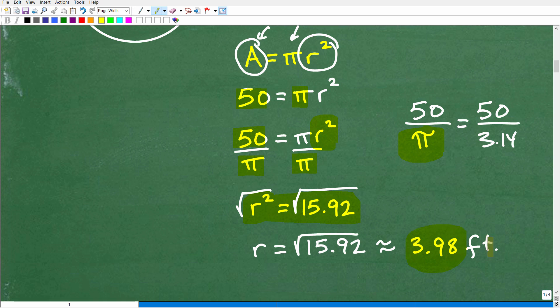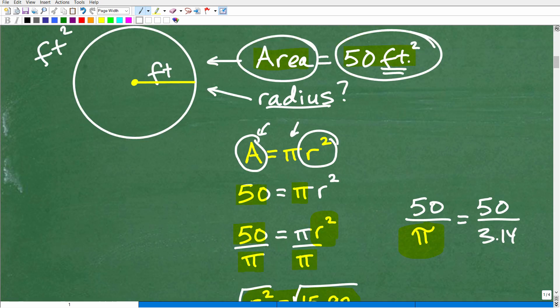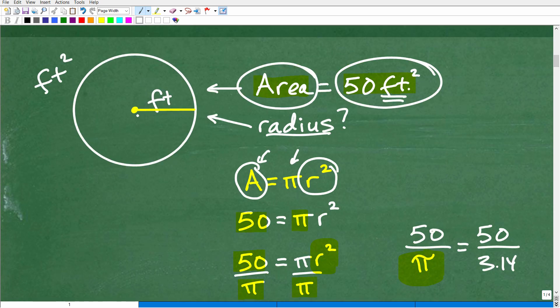But 3.98, what? Well, feet. Because remember the radius. Let's go back here to our lovely little diagram. The radius is measured in just feet. Because when we square the radius, when we're finding the area, we're going to get feet squared.